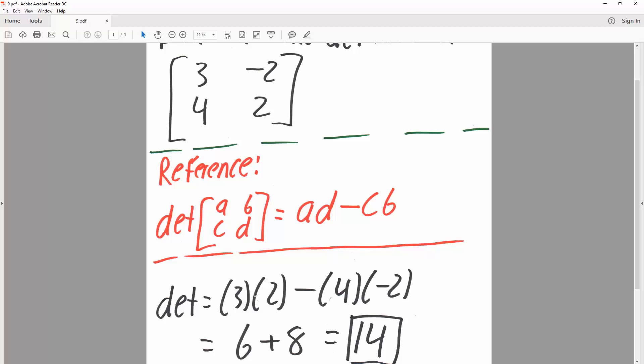So 3 times 2 is 6, minus 4 times negative 2 would be plus 8. And so the determinant would be 14. And that's all we need to do to determine the determinant for a 2 by 2 matrix.